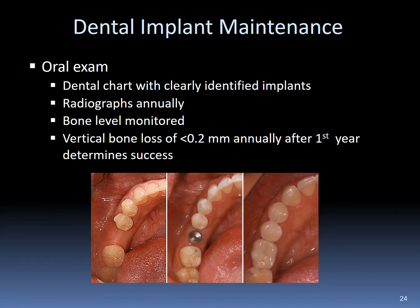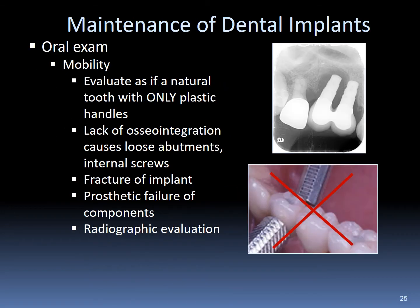Maintenance begins with an oral exam to reference previous dental charting of the implant. Radiographs are taken annually, and bone level is monitored for changes. If vertical bone loss of less than two-tenths of a millimeter occurs within the first year, the procedure is considered a success. Mobility is routinely checked using plastic handles instead of metal. Lack of osseointegration causes loosening of the abutment and internal screws. Fracture and prosthetic failures are evaluated and treatment recommended.